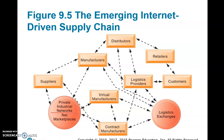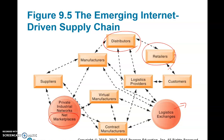The internet has changed supply chains because of its flexibility and connectivity. You have virtual and contract manufacturers, private industry networks, chain logistics exchanges, net marketplaces like Amazon or company-owned platforms like Tesla, as well as real-world distributors and retailers. Both virtual and brick-and-mortar companies are pulled together in an emerging internet-driven supply chain.